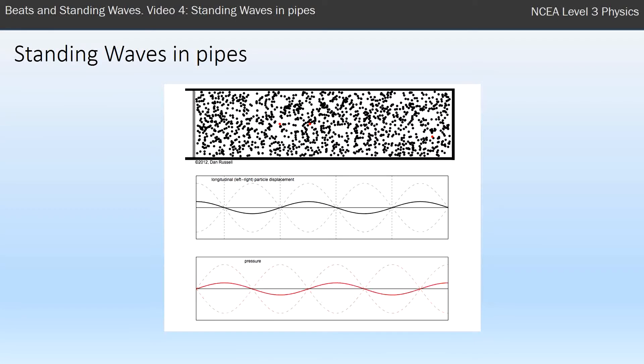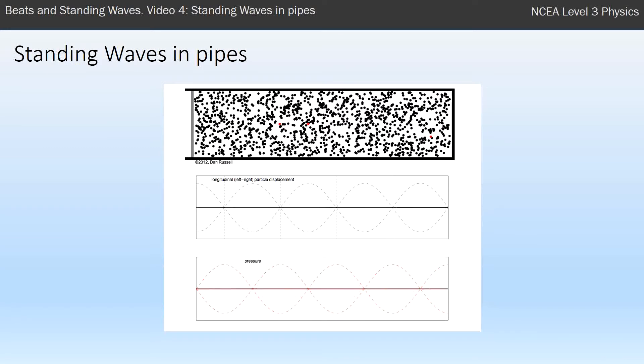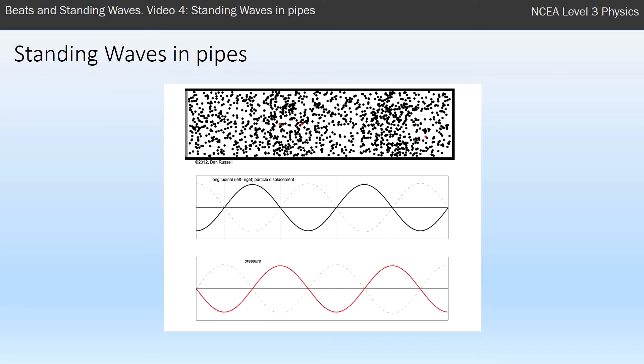We're really looking at sound waves, and the two types of wave pipes we look at are open pipes with two ends open, and a closed pipe with one end open and one end closed.